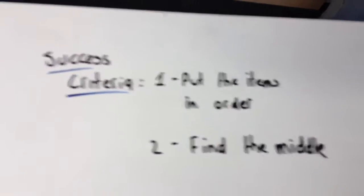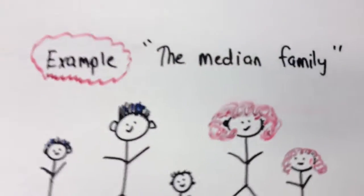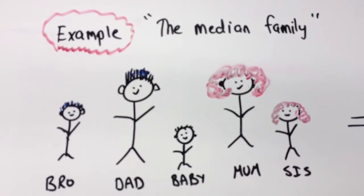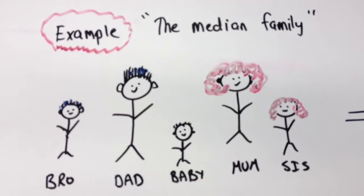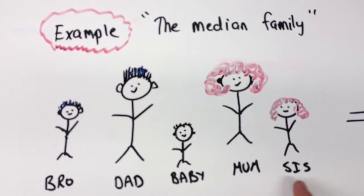Let me give an example. I'm going to introduce you to the median family. Here's the median family. As you can see there's Bro, Dad, Baby, Mum, and Sis.